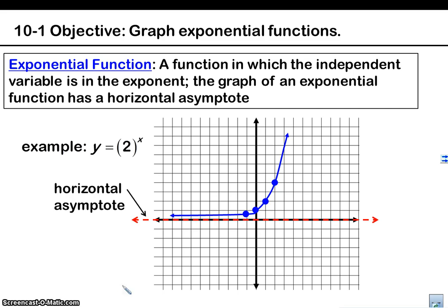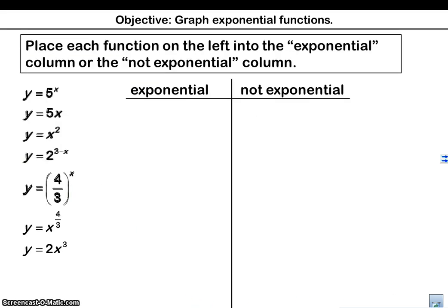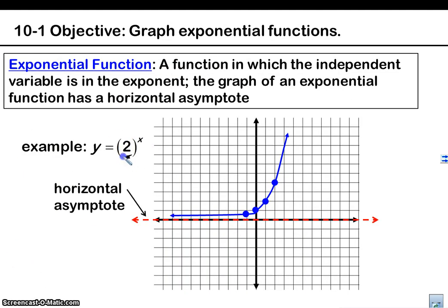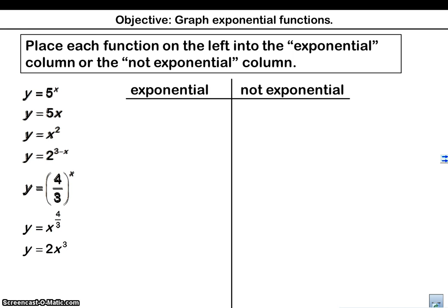We kind of already talked about this a little bit in class today, but I'm going to show you again the definition of an exponential function. An exponential function is always going to have this horizontal asymptote, and right now we're going to start this asymptote at the x-axis. There's an example: y equals two to the x, and I think I graphed this in class. We're going to use a table of values, pick some points, and graph this curve.